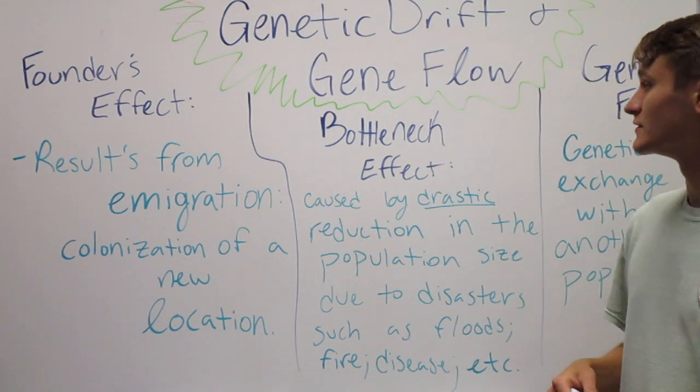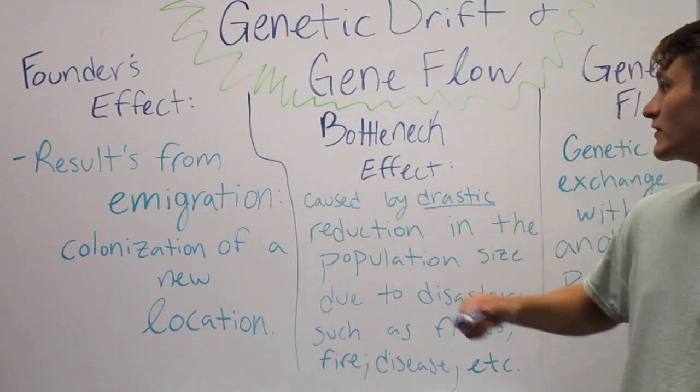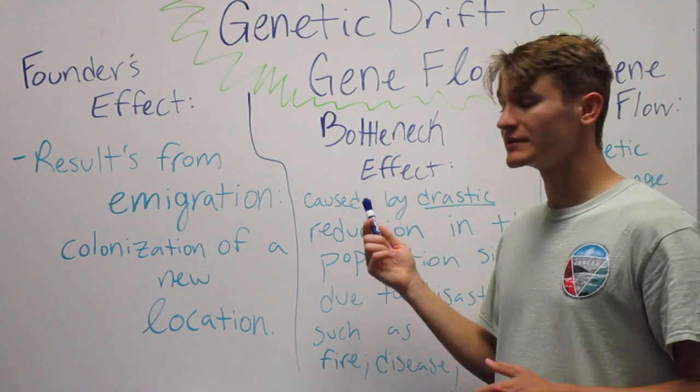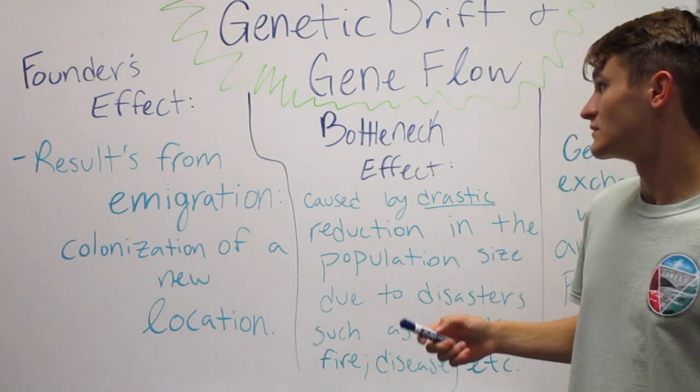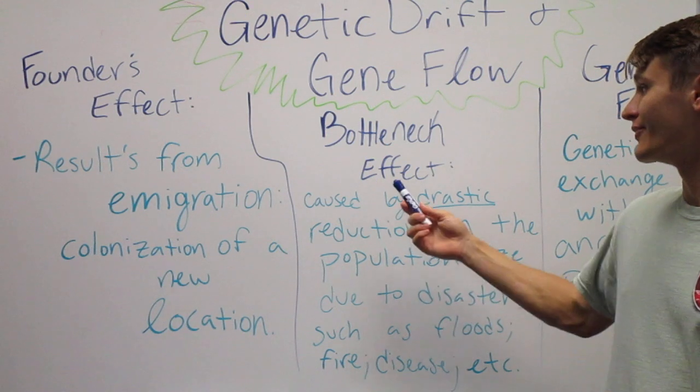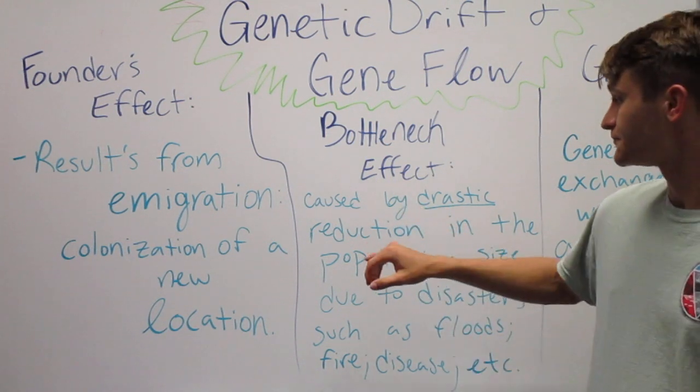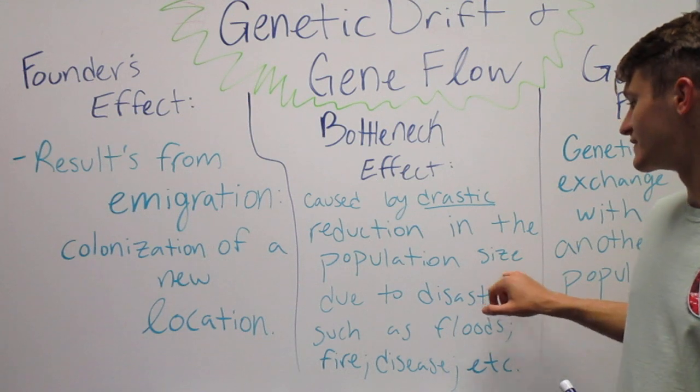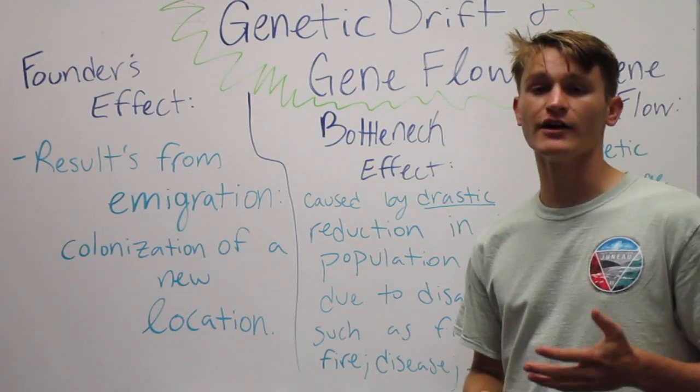The bottleneck effect, which is typically tested on the MCAT, so you need to know this for the MCAT and for general ecology too, is caused by drastic reduction in the population size due to disasters.